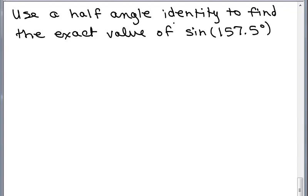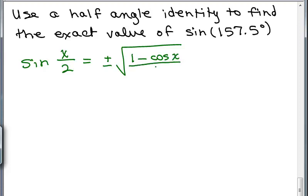We're going to use a half-angle identity to find the exact value of sine of 157.5 degrees. First, what's a half-angle identity for sine? Let's write that out. It says the sine of X over 2 is equal to plus or minus the square root of 1 minus cosine of X all over 2.